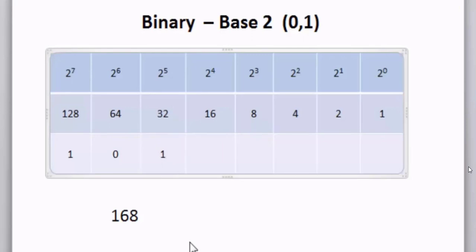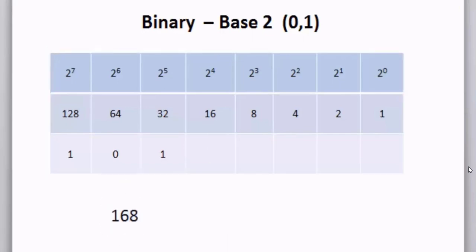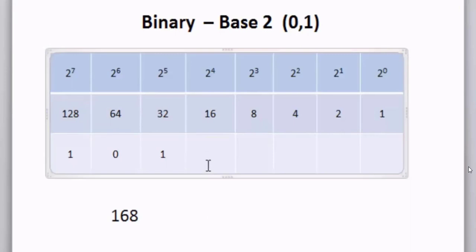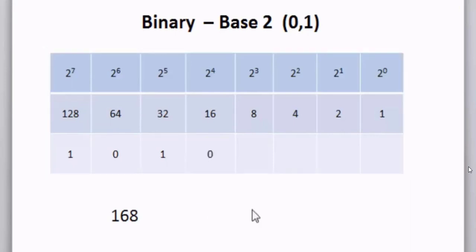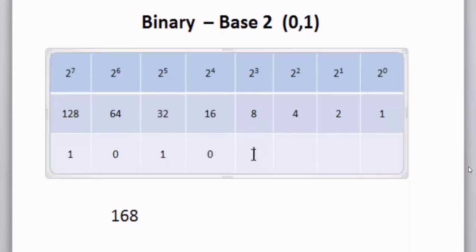Now I have 160. Do I need a 16? No — that would make 176, which would go over my target number of 168. I'll put a 0 here. What about an 8? If I add an 8, I'll hit the number perfectly. 128 plus 32 plus 8 is 168. I'll follow this up with 0s in the 4s place, the 2s place, and the 1s place.